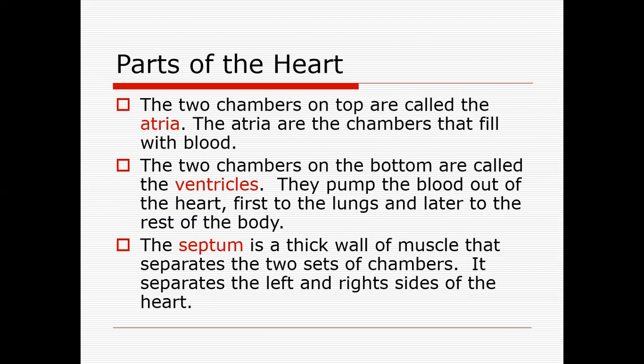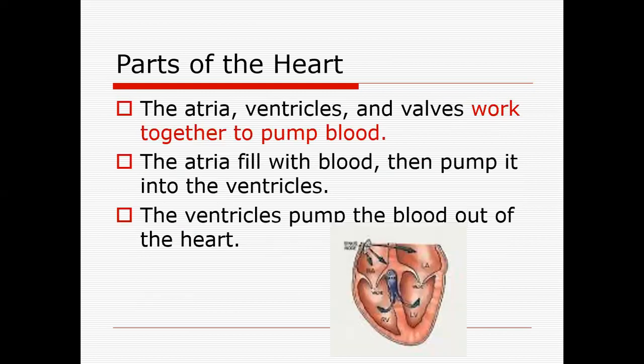The right atrium receives deoxygenated blood from the body. The left atrium receives oxygenated blood from the lungs. The right atrium and left atrium are separated from each other by a wall called the septum, which keeps oxygenated and deoxygenated blood separated. The atria, ventricles, and walls work together to pump the blood. When the atria contract, the ventricles do not contract simultaneously — there is a gap of a few seconds.